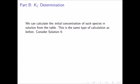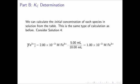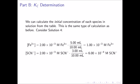We can calculate the initial concentrations of each species in solution from the table using the same type of dilution calculation as before. We will look at solution 4. The concentration of the ferric ion in solution 4 begins with the stock concentration of 2.00 times 10 to the negative 3 molar, then we multiply by the dilution factor of 5 milliliters to 10 milliliters, giving 1.00 times 10 to the negative 3 molar ferric ion. For the thiocyanate, we begin with 2.00 times 10 to the negative 3 molar and multiply by 3 milliliters to 10 milliliters, resulting in 6.00 times 10 to the negative 4 molar thiocyanate ion.